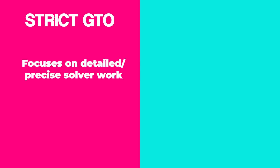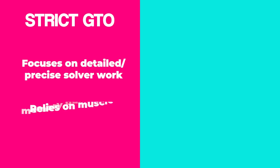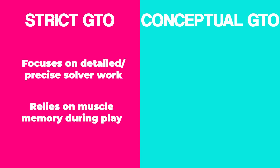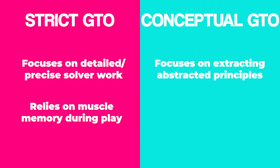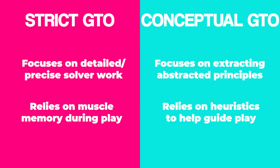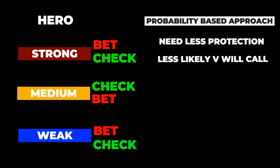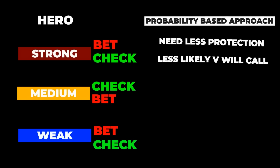Those that subscribe to this school of thought tend to learn GTO mainly through memorization. They look up or drill specific scenarios and then mimic the solver's outputs when they encounter the same or similar situations. The other school of thought, which we will refer to as conceptual GTO, doesn't rely as much on precise memorization, but rather focuses on utilizing principles from game theory as guideposts to help reason their way through strategic decisions. This latter approach is the one that we take on this channel, but this is not to say that it is superior to strict GTO. Each has its place.